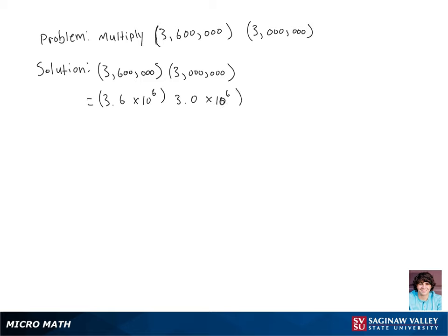Now we are going to use the commutative property of multiplication to rewrite this as 3.6 times 3.0 times 10 to the sixth power times 10 to the sixth power.